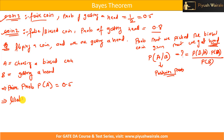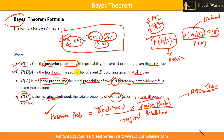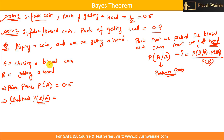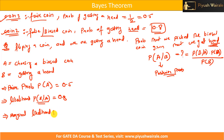Now, the likelihood is P(B|A) — the probability of getting a head given that I selected a biased coin. Since I selected the biased coin, the probability of getting a head is 0.8. So the likelihood is 0.8.